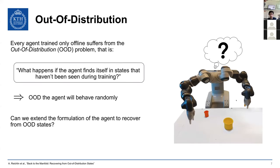Independently of the family of methods used to learn an offline policy, in most cases you suffer from the out-of-distribution problem. Out-of-distribution means the agent could step into states that don't belong to the training distribution, which is particularly problematic for a decision-making agent — once you step OOD, you have no way of recovering. You end up in the same situation as the robot in the first video, behaving randomly with no notion of how to recover.